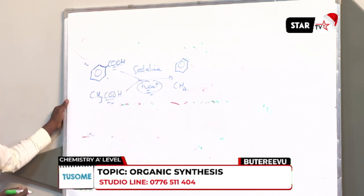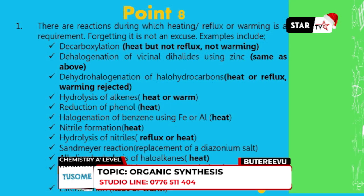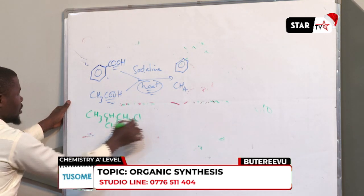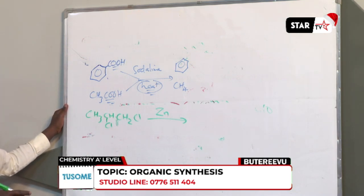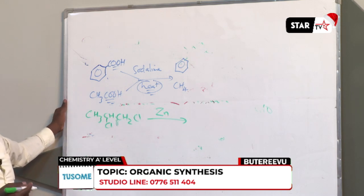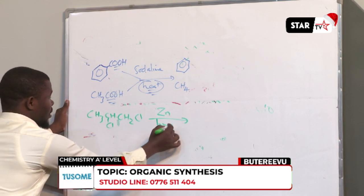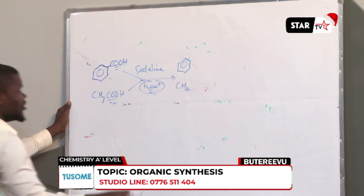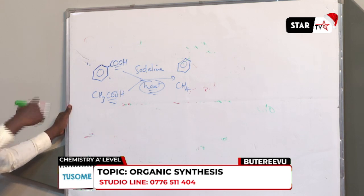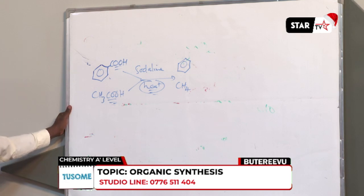The other reaction that involves heating is dehalogenation of vicinal dihalides using zinc. If you want to dehalogenate vicinal dihalides — for example CHCl-CH2Cl — using zinc to form an alkene, you must heat. That's another reaction, though it is not a common one for synthesis purposes.